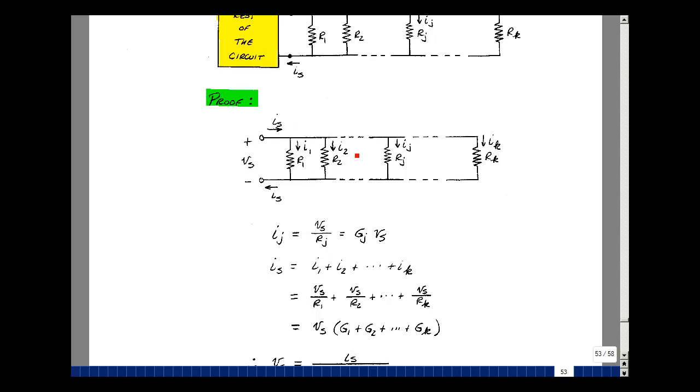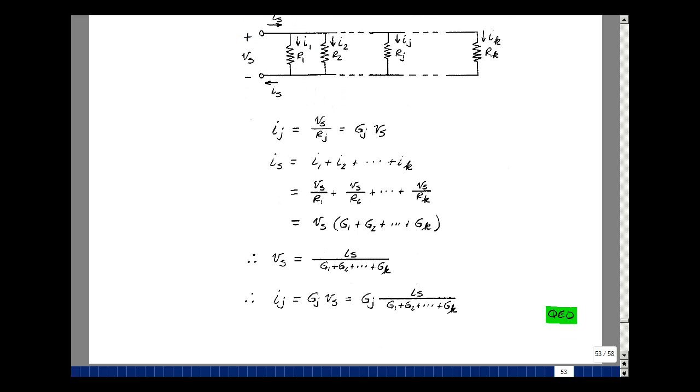Now, what is the current I sub S equal to? Well, it's equal to I1, I2, all the way through I sub K. But the current in R1 is going to be, again, V sub S over R1. Likewise, for I2, V sub S over R2, and so on. You can pull out the common V sub S. Then you have 1 over R1 plus 1 over R2, all the way through 1 over R sub K, or just simply the sum of the conductances.